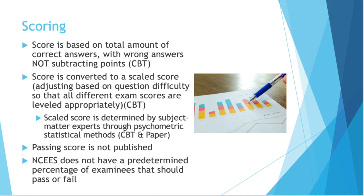You and your friend could be taking the same engineering exam but have different questions. You could have gotten more wrong, but if your questions were more difficult, the ones you got right could give you a higher score — meaning you did better than your friend who got more correct answers but had easier questions. The passing score each year is not published, so it varies. NCEES does not have a predetermined percentage of examinees that should pass or fail, which is good.